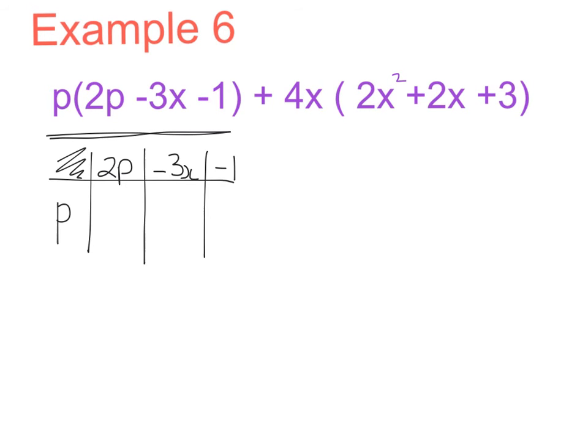I'm going to work out as normal. p multiplied by 2p or 1p multiplied by 2p will give me 2p squared. A plus by a minus gives me a minus, and p multiplied by 3x is just going to give me 3px. I have a plus by a minus which is going to give me a minus, and p by 1 is going to give me 1p or p. So that's the first bit.